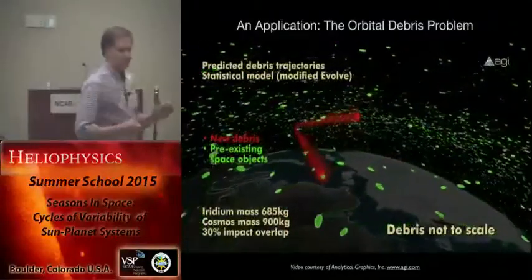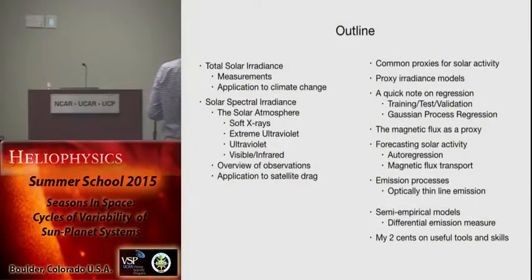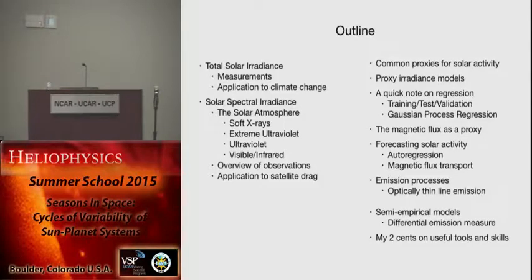So those are my three main takeaways. Here's the outline of the rest of my talk. I'm going to talk about the total solar irradiance, then the solar spectral irradiance, organized by wavelength — so I'll talk about the soft X-rays, the EUV, the ultraviolet, and the visible and infrared. I'll give a very brief overview of observations and discuss the satellite drag problem in more detail.